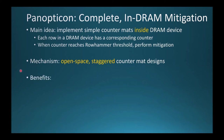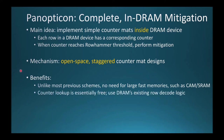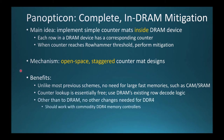Panopticon has several benefits over previous schemes. It doesn't need large amounts of fast memories. Unlike prior work, it doesn't need to implement a separate counter lookup circuit. Instead, it reuses DRAM's row decoding logic to access the counter for the activated row. And finally, in the case of DDR4, it requires no changes to any components other than DRAM, and should work with commodity DDR4 memory controllers.